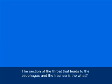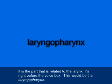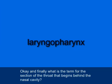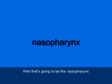The section of the throat that leads to the esophagus and the trachea — that's a little tricky. We need to remember it's the lower, third part of the throat, related to the larynx, right before the voice box. That is the laryngopharynx — L-A-R-Y-N-G-O-P-H-A-R-Y-N-X. And what is the term for the section of the throat that begins behind the nasal cavity? That's the nasopharynx — N-A-S-O-P-H-A-R-Y-N-X.